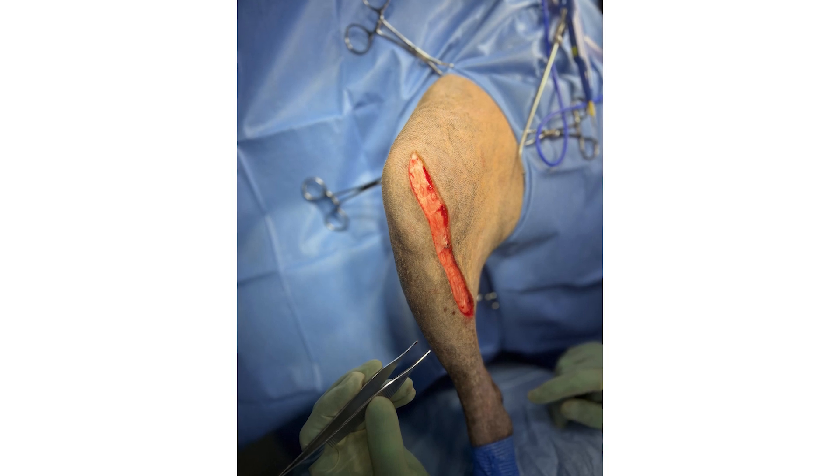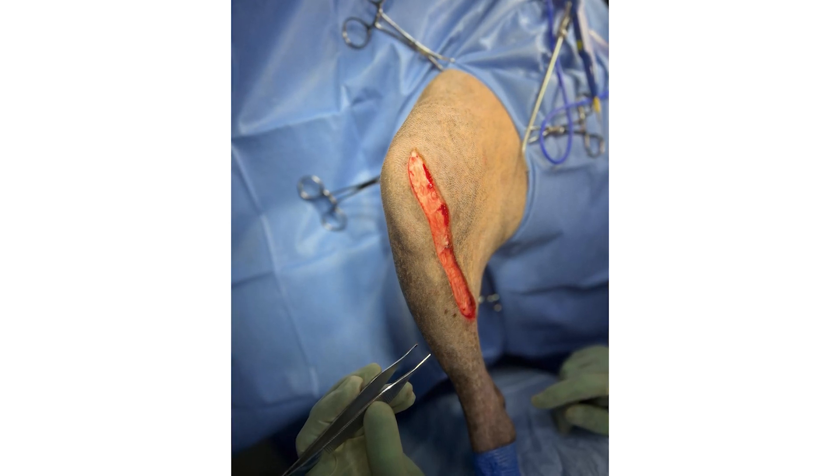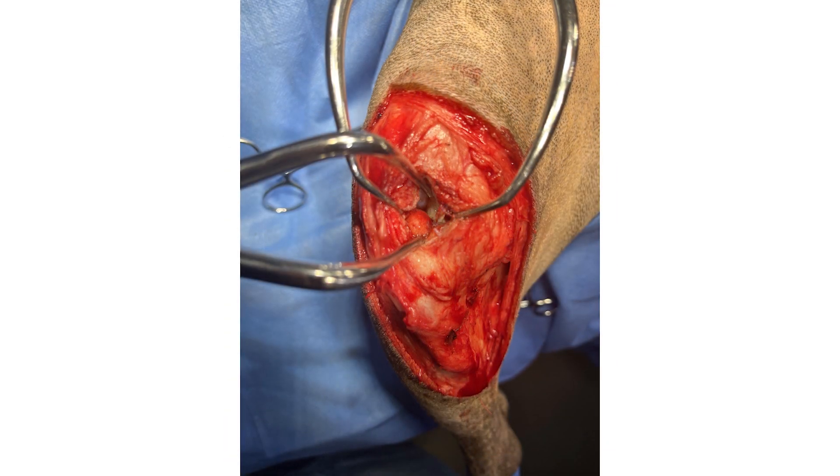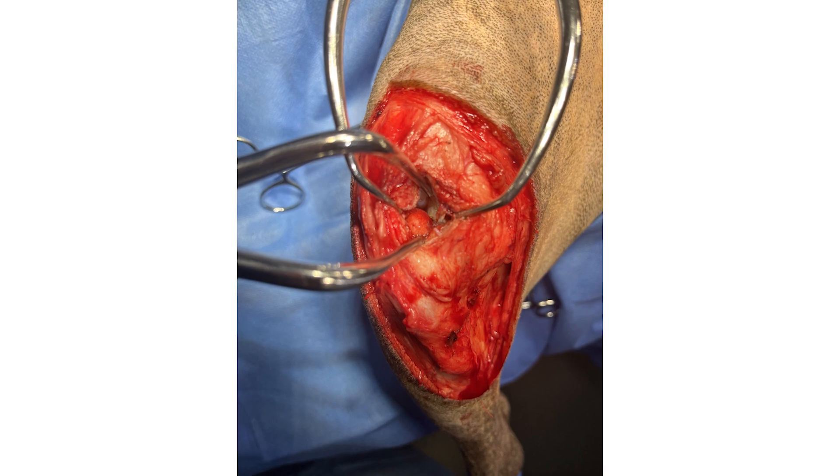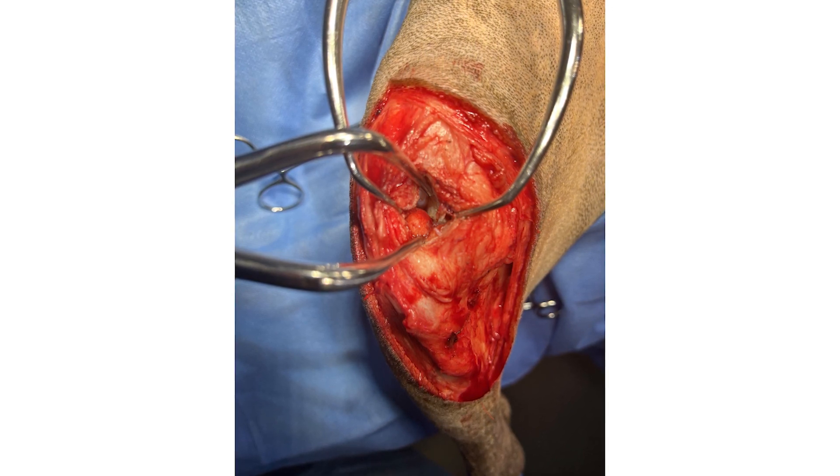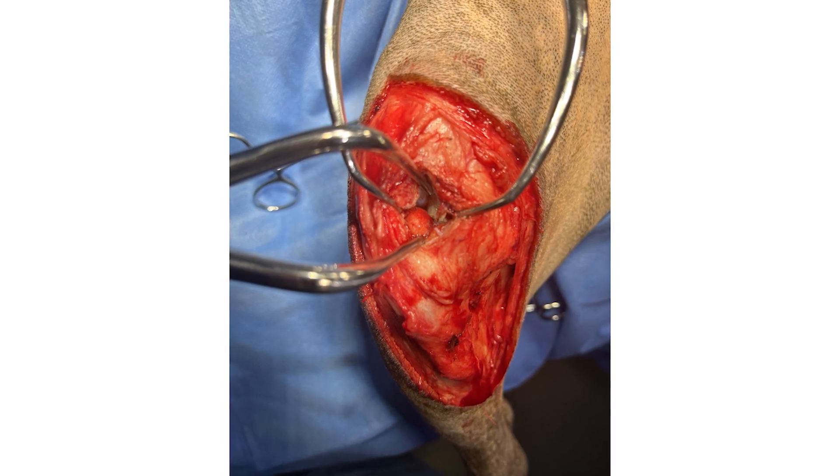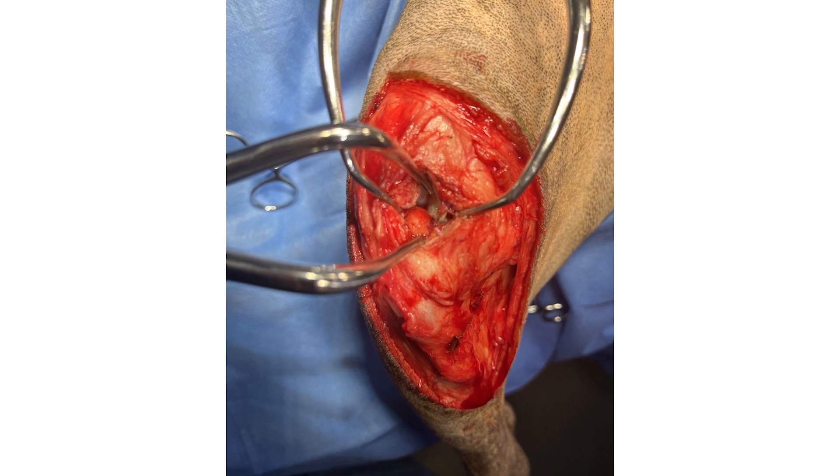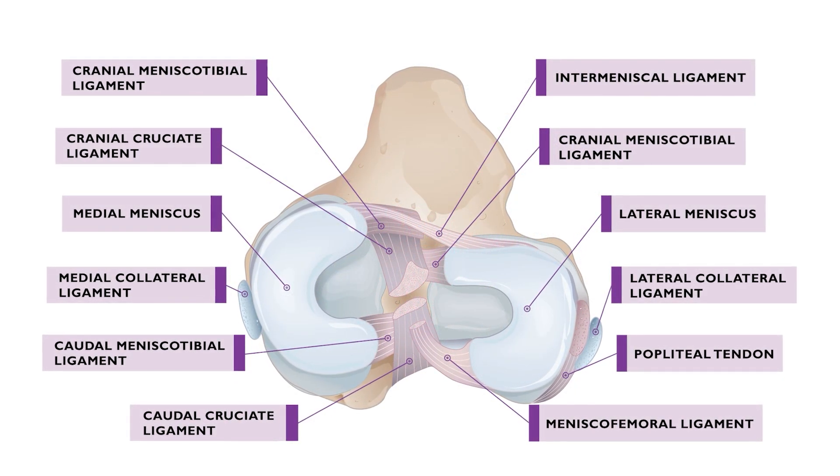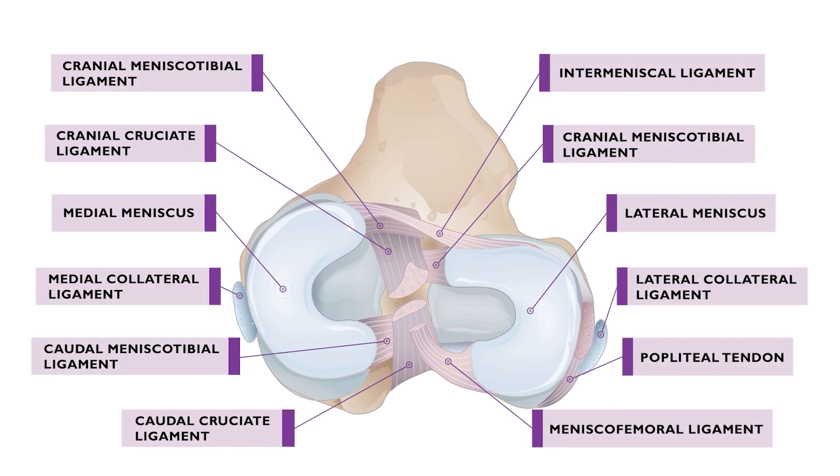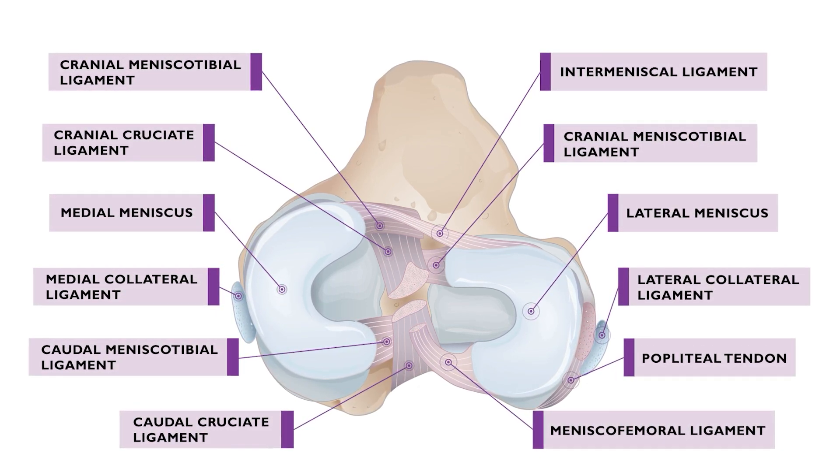The patient is positioned in dorsal recumbency and the stifle joint is approached via a medial incision. A mini-medial arthrotomy or arthroscopy should be performed in order to inspect the joint space. Particular attention must be paid to inspection of the menisci and in particular the medial meniscus. It is important to understand the intra-articular anatomy. Damaged areas of meniscus and remnants of the cruciate ligament should be debrided. The joint capsule is left open once the arthrotomy is complete.